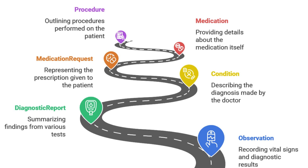So the visit is wrapping up and the doctor sends you home with a prescription. FHIR plays a role there too. We have the medication request resource — the digital version of your prescription — which tells the pharmacy exactly what medication you need, the dosage, frequency, and any special instructions. There's also the medication resource itself, which provides detailed information about the drug, including potential side effects and interactions with other medications. It's like having a digital pharmacist double-checking everything.